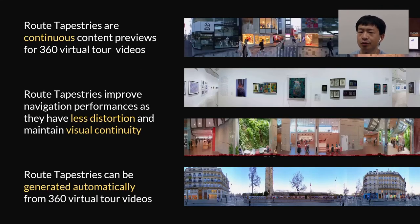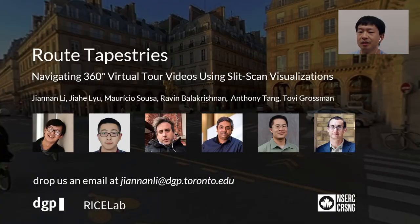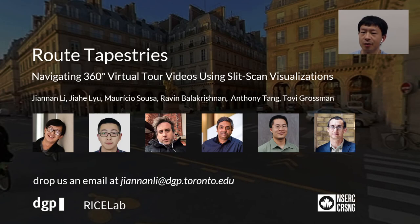To sum up, Root Tapestries are continuous content previews for 360 virtual tour videos. They can improve navigation performance as they have less visual distortion and maintain visual continuity. Root Tapestries can be automatically generated from 360 virtual tour videos, and our paper presents more technical details. Finally, I would like to thank you for your interest in this talk, and thank my collaborators and funding agency. If you are interested in more details or discussions, feel free to ask me in the upcoming Q&A, or drop us an email at the address shown in the slide. Thank you very much.